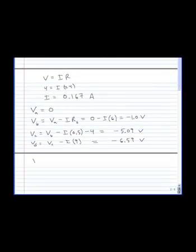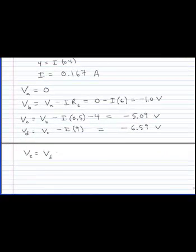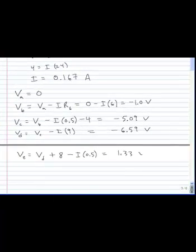The voltage at E is going to be the voltage at D plus 8 volts. We're going up through the battery. Minus I times a half an ohm. We're going down through that resistor. And that is 1.33 volts.